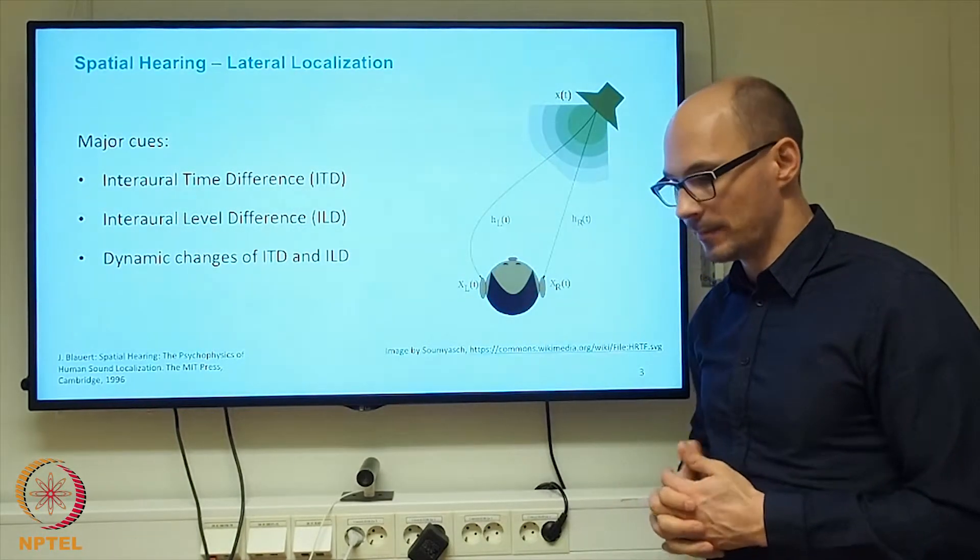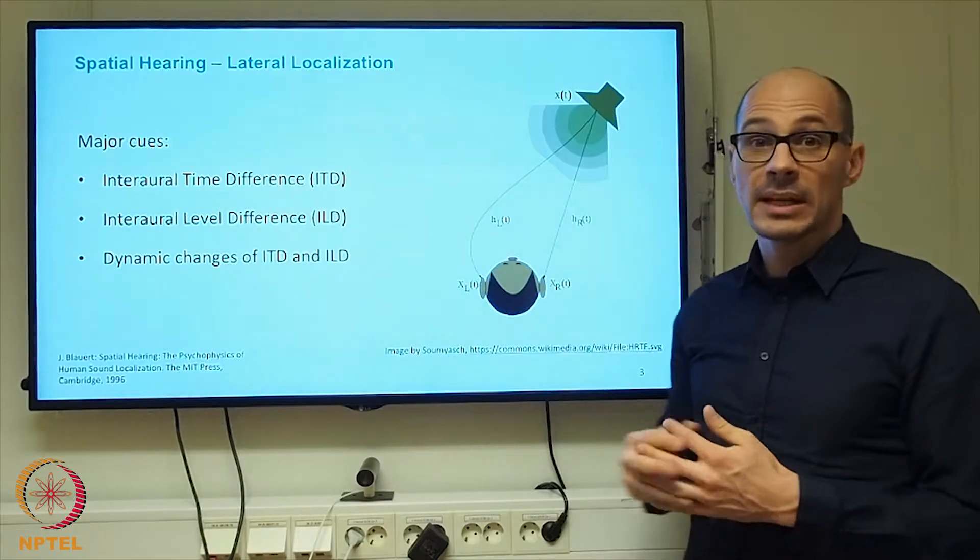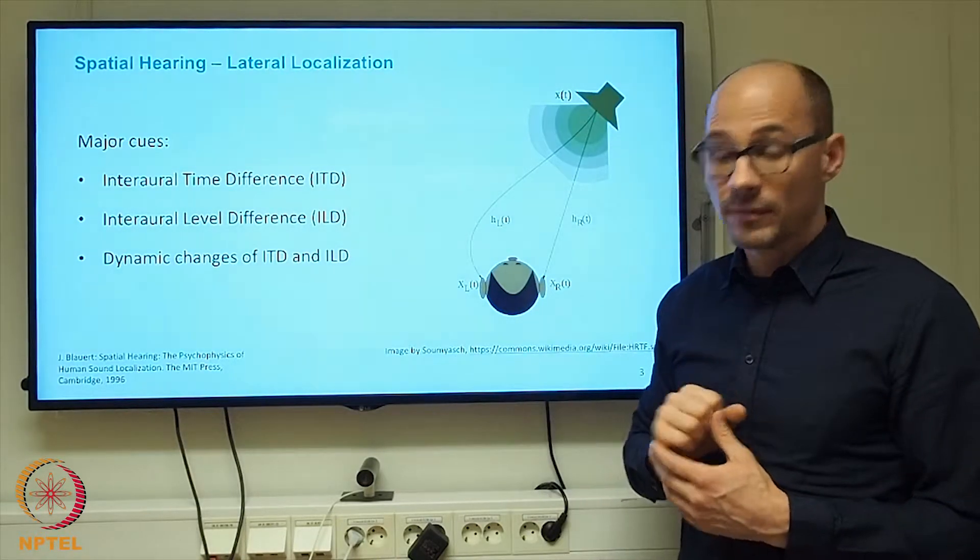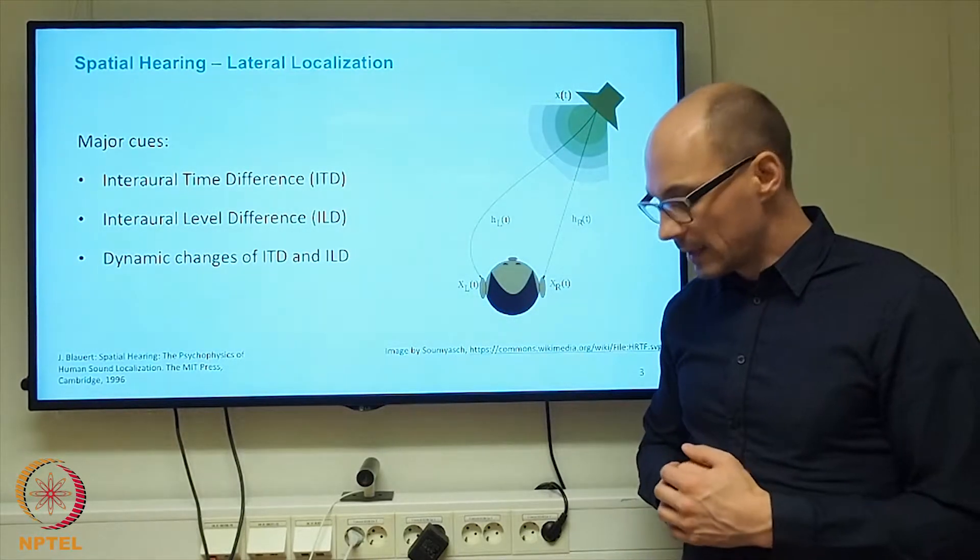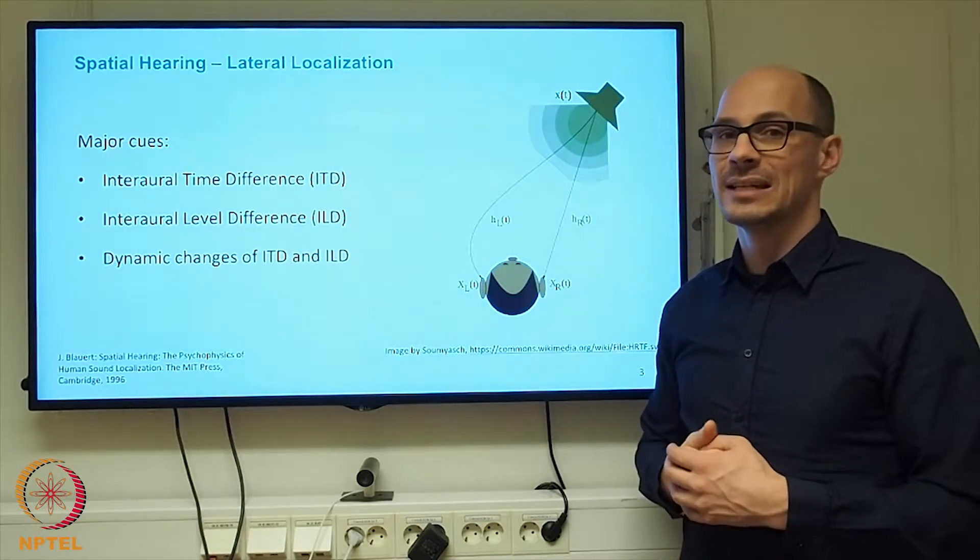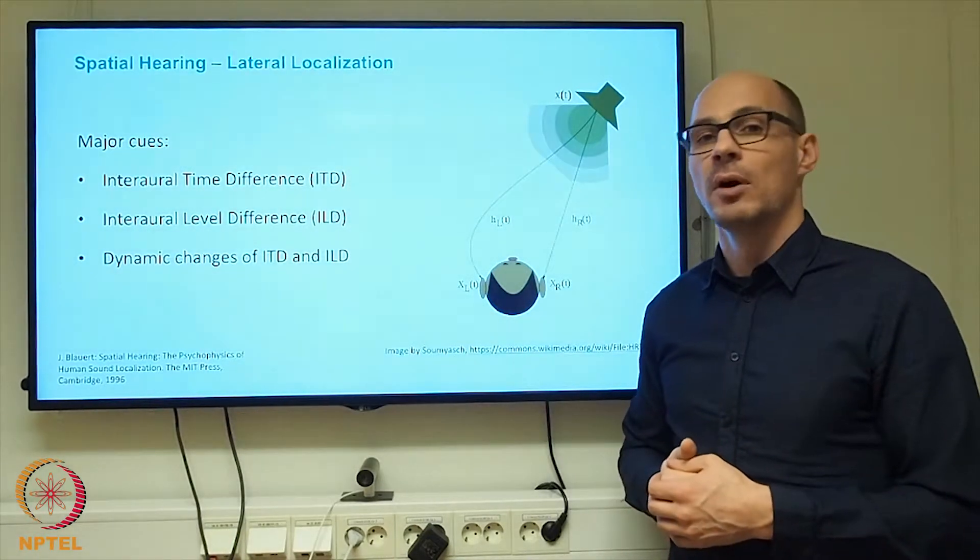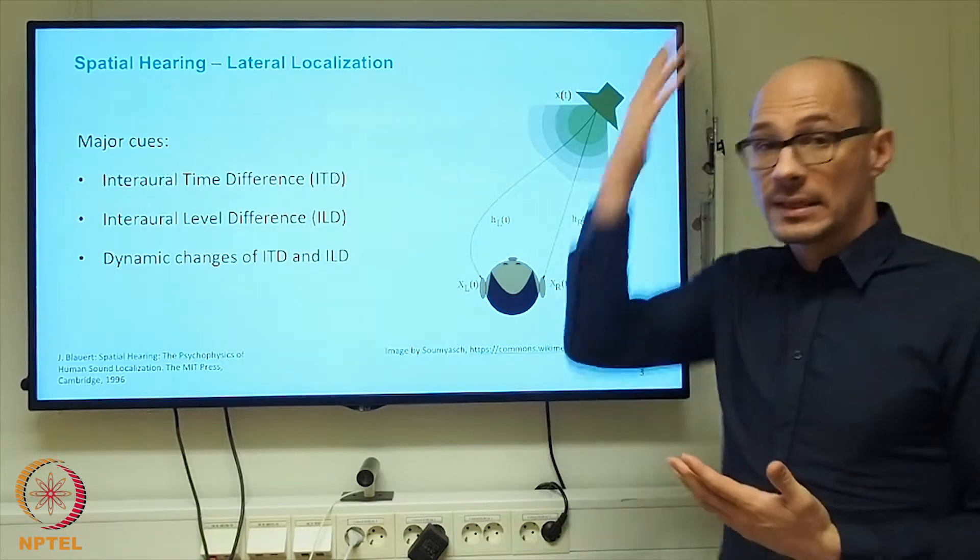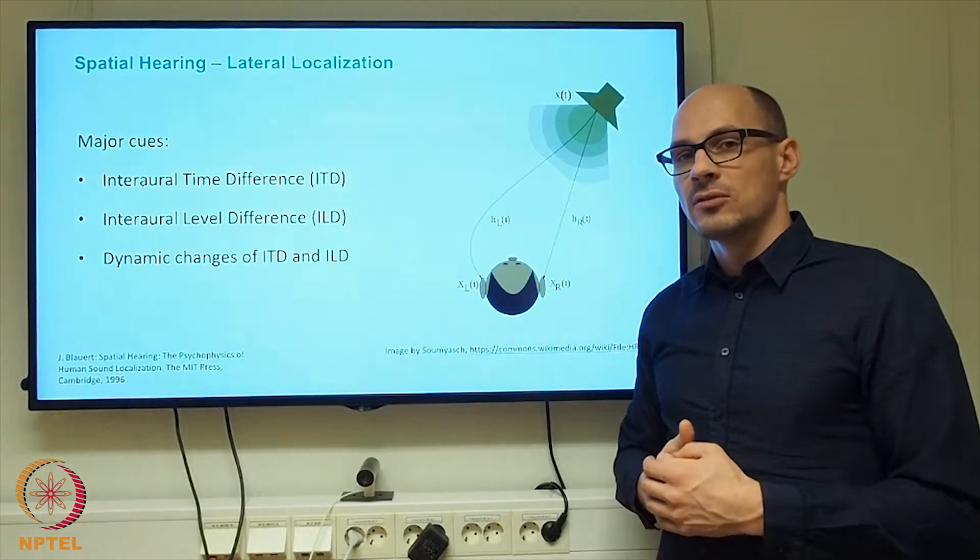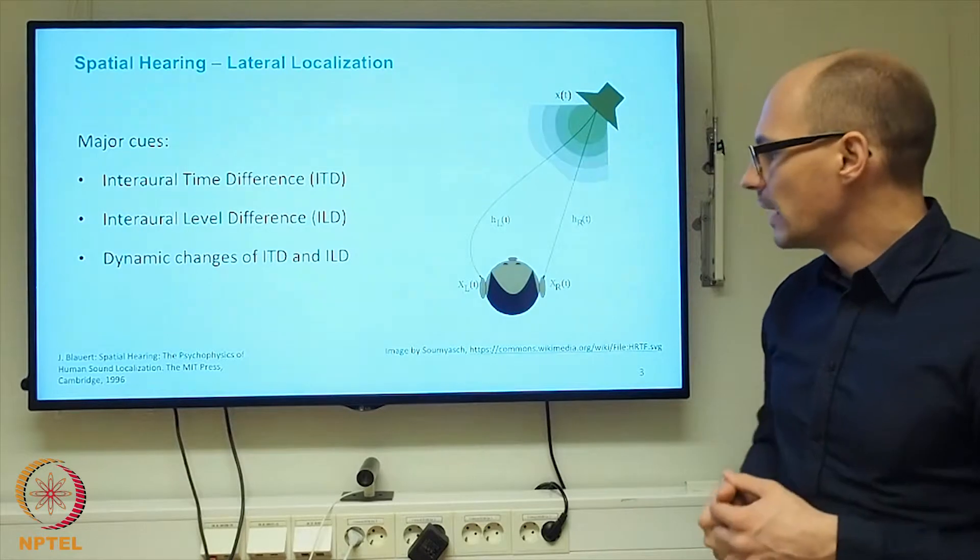This is a very strong cue that allows our auditory system to differentiate whether a sound source was in front or behind the listener. Similarly, a sound source above or straight below the listener will not cause any changes in interaural differences when rotating the head above the vertical axis. This is one means how we can localize sound sources above and below us.